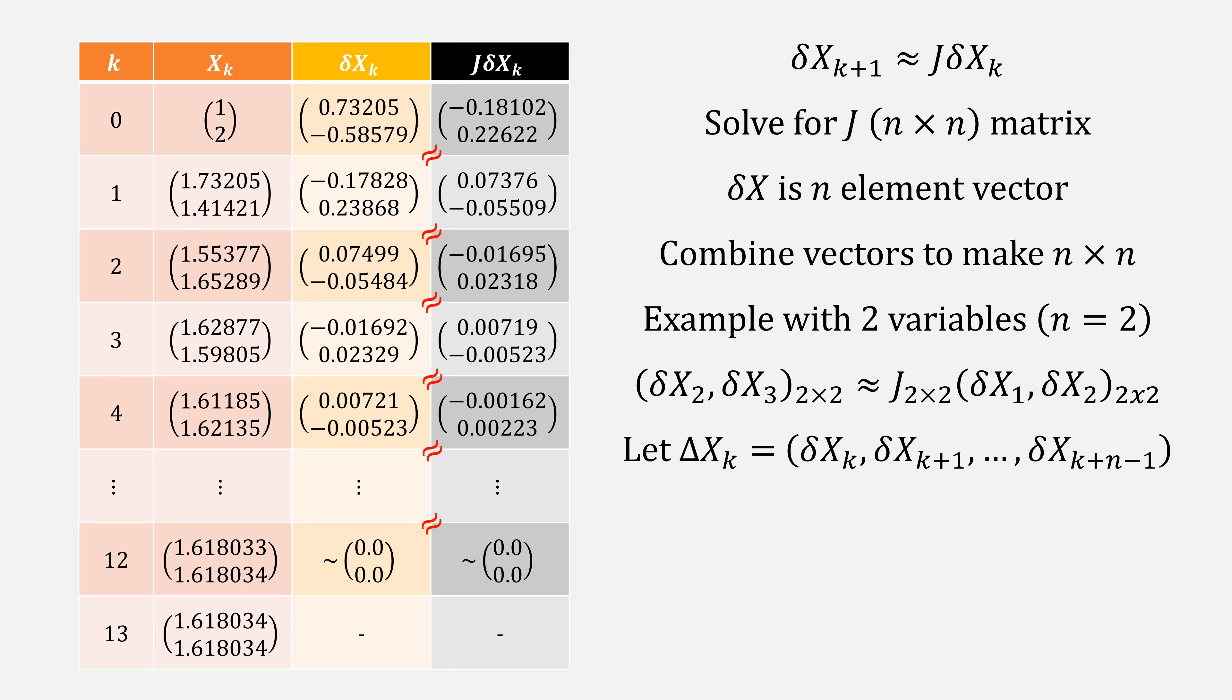If we let those matrices be called delta x, then delta x sub k plus 1 is approximately j times delta x. If we multiply it by an inverse, now we have an approximation for j.